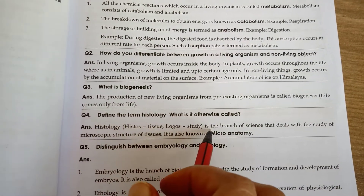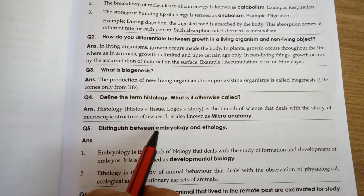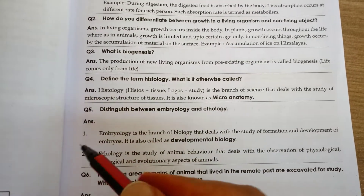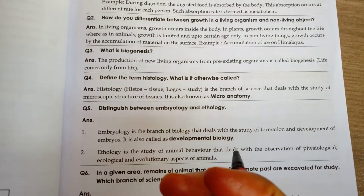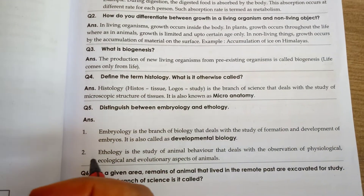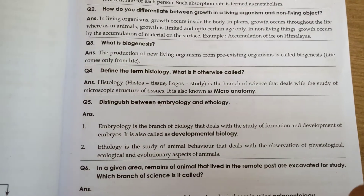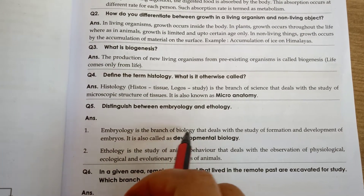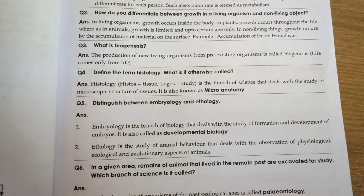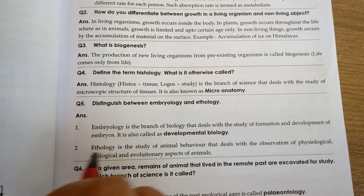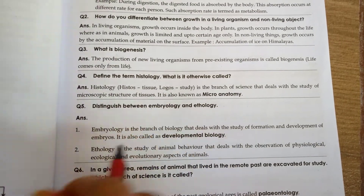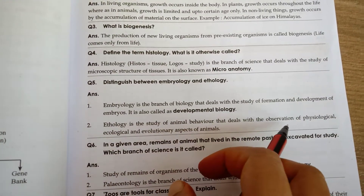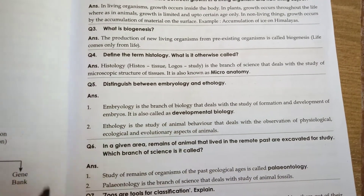Distinguish between embryology and ethology. Embryology is the branch of biology that deals with the study of formation and development of embryos — from the embryo stage through fetal development. It is also called developmental biology. Ethology is the study of animal behavior, dealing with observation of physiological, ecological, and evolutionary aspects of animals.